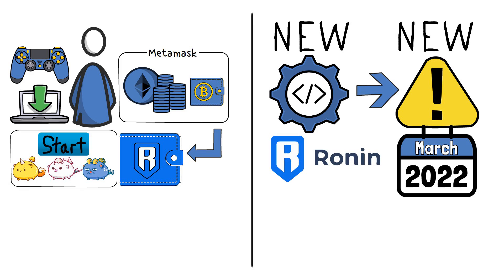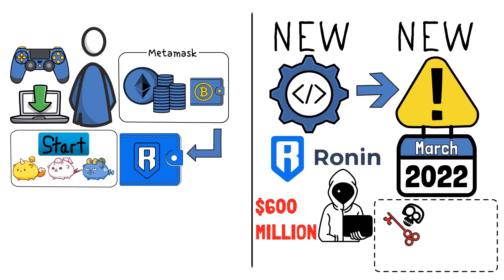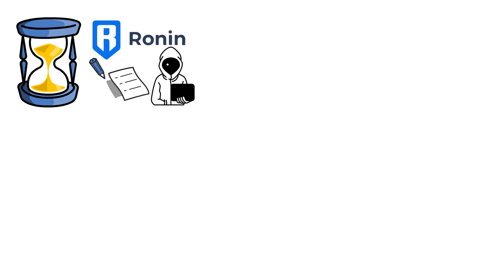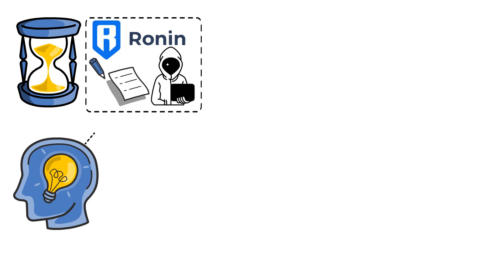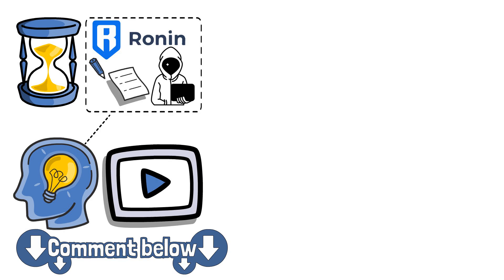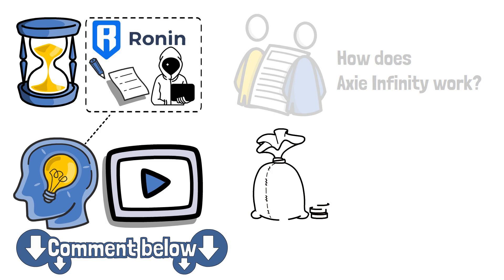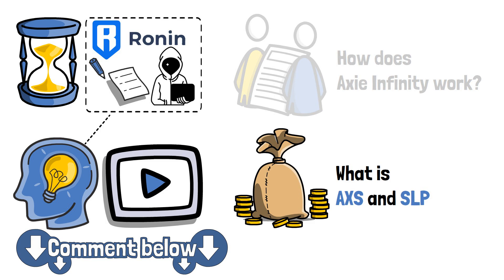In March of 2022, Ronin was hit by a severe hack which drained the sidechain of over 600 million dollars. It is believed that the attacker used hacked private keys to forge fake withdrawals. If you want to know more about this sidechain, leave a comment below and a dedicated video will be considered. Now that we have a full-scale understanding of how Axie Infinity works, it is time to look into its tokenomics and find out what the AXS and SLP tokens are.